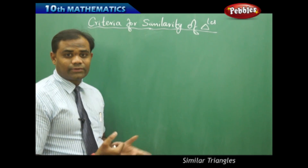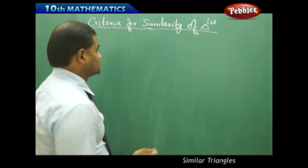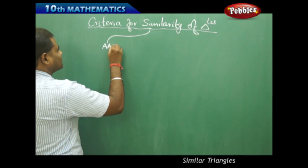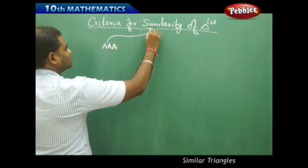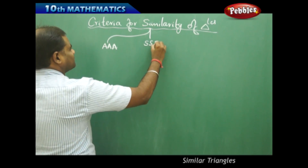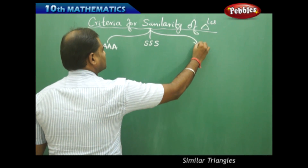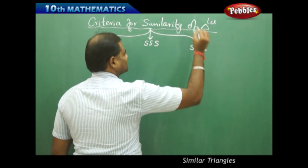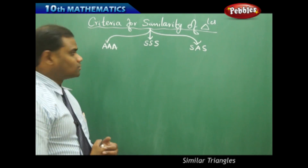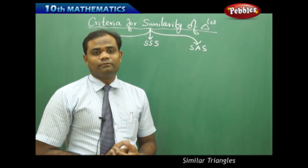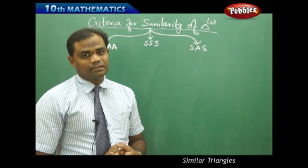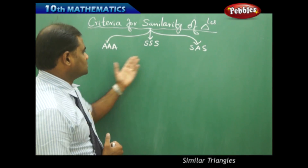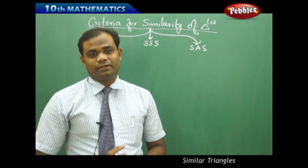So what are these three criteria? The first criterion is AAA (triple A), the second is SSS (triple S), and the third is SAS criterion. These three criteria define the similarity of triangles. Let's see how each criterion is defined.